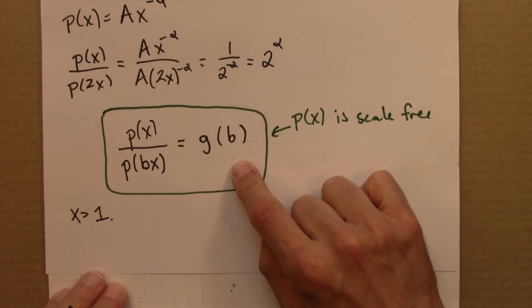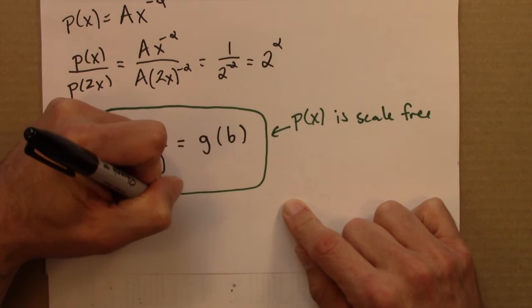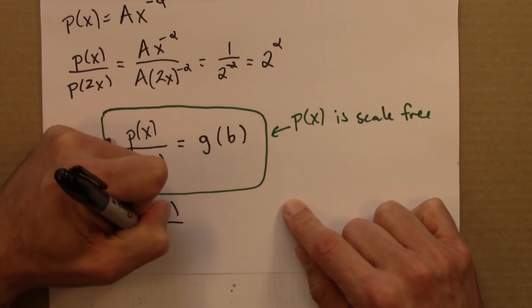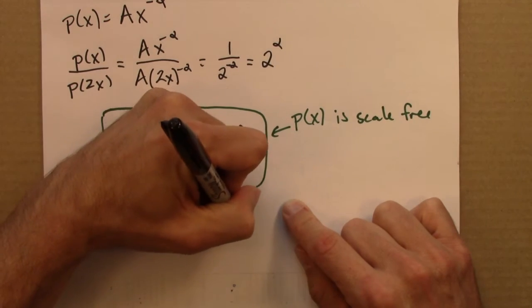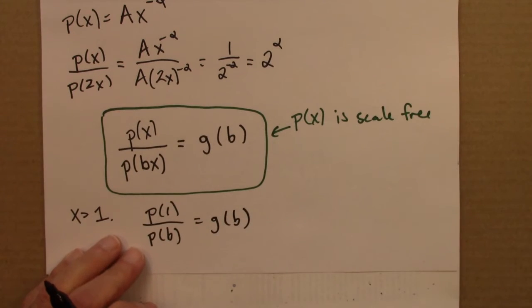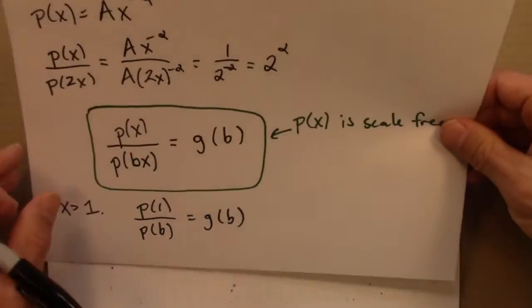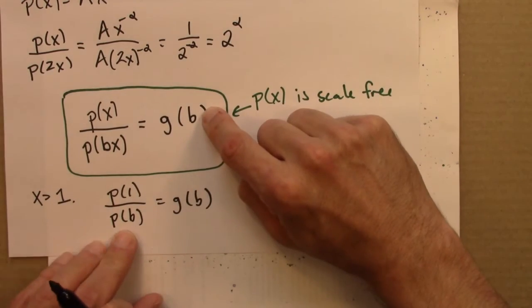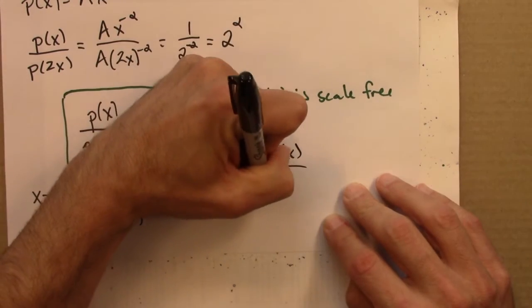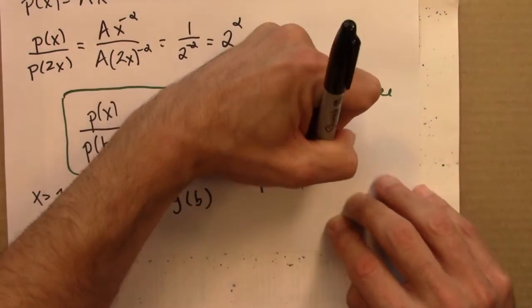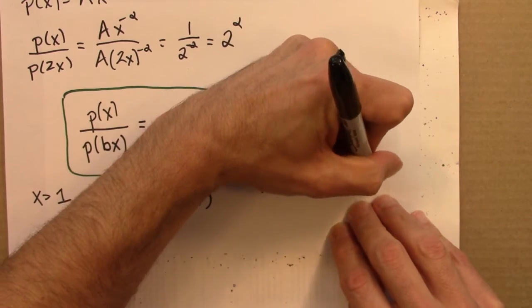So I'm going to take this equation and replace x with 1. And I'm going to get P of 1 over P of B is G of B. So now I have an expression for G of B. So I'm going to replace G of B on the right hand side with this. So that's going to give me P of x over P of Bx equals P of 1 over P of B.